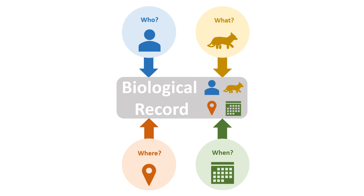In summary, there are four basic components of a biological record: who, what, where and when.